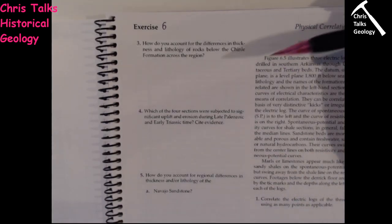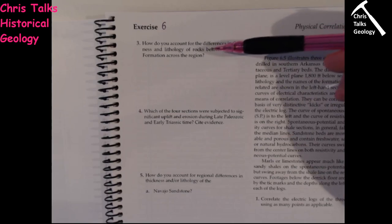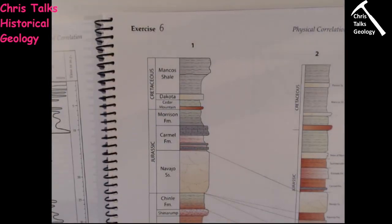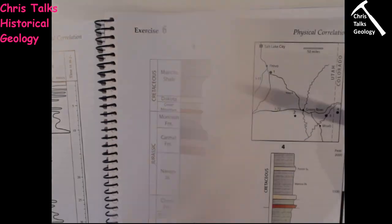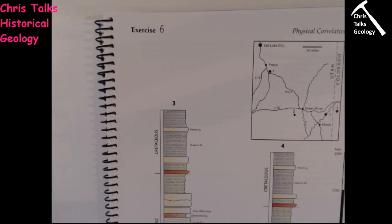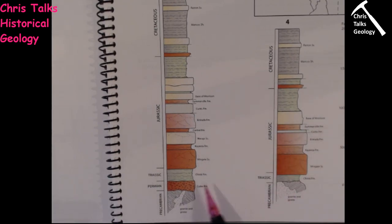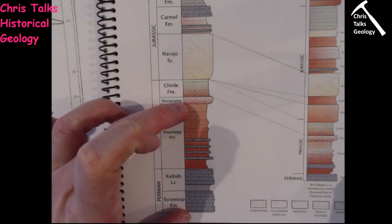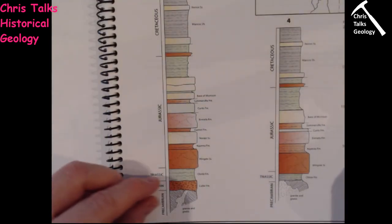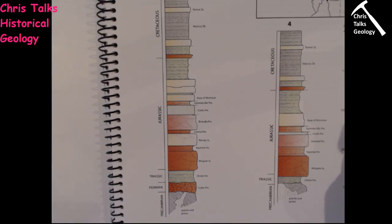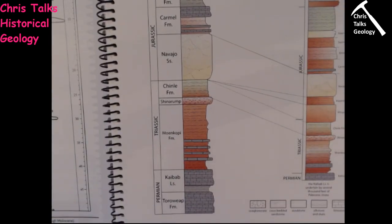Question 3: How do you account for the differences in thickness and lithology of rocks below the Chili Formation across the region? The Chili Formation appears in each column. Underneath it in one column there's a huge stack of rock; moving across, the stack gets smaller, smaller, and eventually disappears entirely down to basement rocks. There are several different possible explanations — think carefully about what you see.